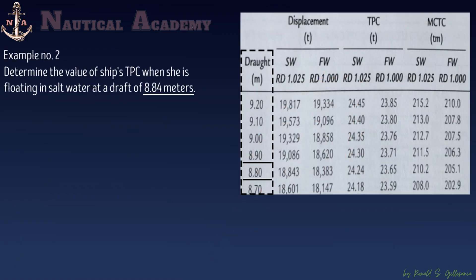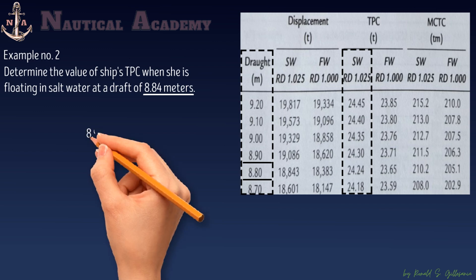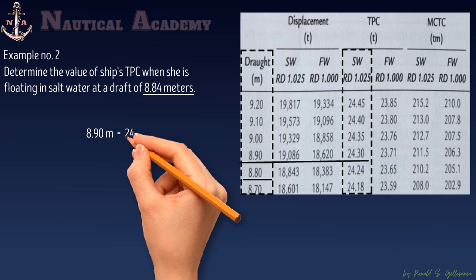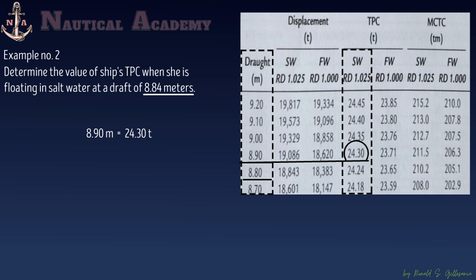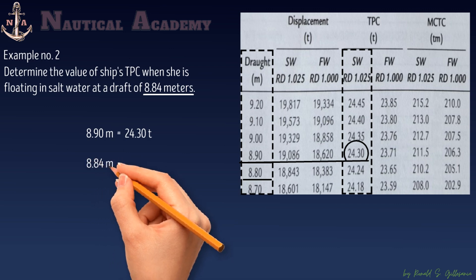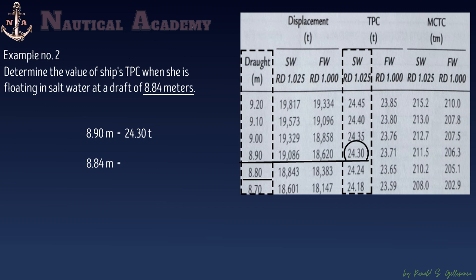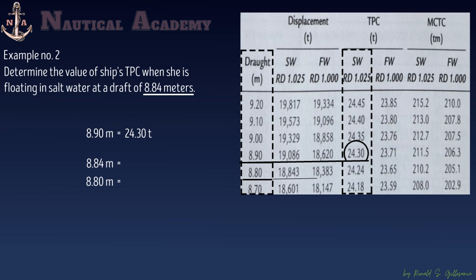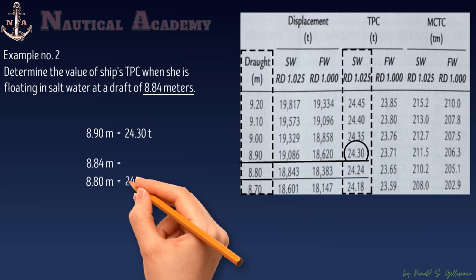Going back to the second example, I will use the hydrostatic table with a 10-centimeter draft interval to demonstrate interpolation. We need the first and fourth columns to find TPC in salt water. First, write down the draft of 8.90 meters — the next greater draft above 8.84 meters — with its corresponding TPC of 24.30 tons. Below that, write the draft of 8.84 meters with space for the unknown. Then write the draft of 8.80 meters with its corresponding TPC of 24.24 tons.